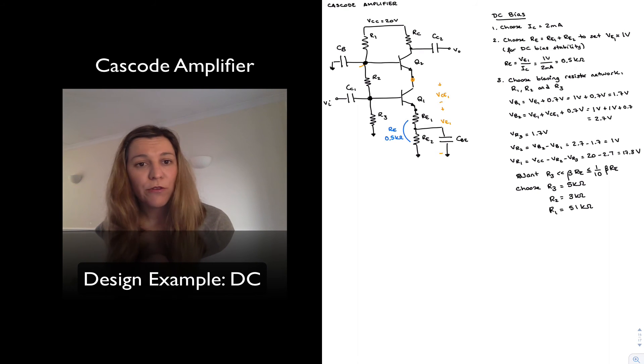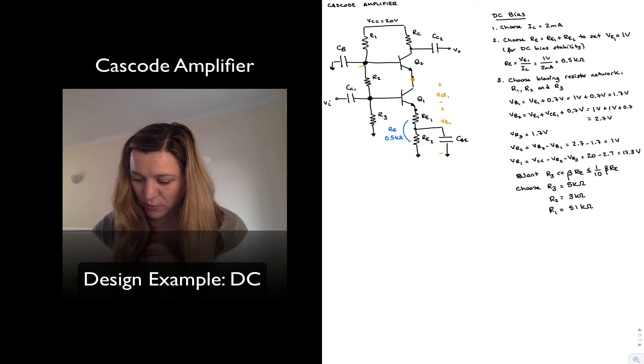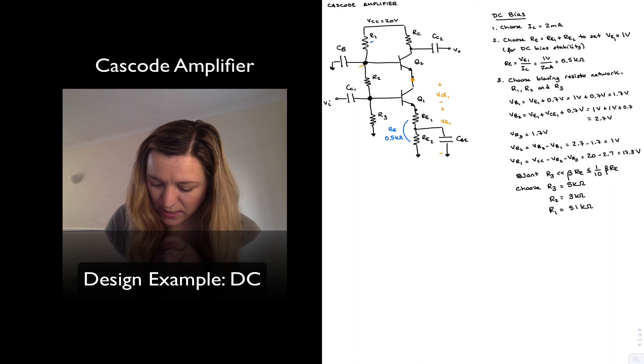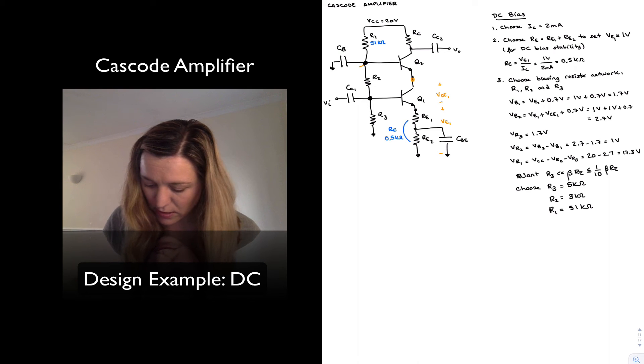Now you may wonder why I'm always driving R3 to the limit. If it has to be less than or equal to one-tenth of beta times RE, why do I choose it to be exactly one-tenth of beta times RE? The reason is R3 plays a key role in determining the input resistance of the circuit. So the higher my value of R3, the higher my input resistance, and that's where the trade-off is. I want to make it smaller so that my biasing network won't be loaded by the input resistance of the transistor, but I want to make it large so that my input resistance will be sufficiently large. So I have those resistor values, which I'm going to enter now. I have 51k, 3k, and 5k.